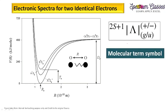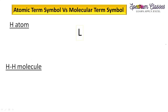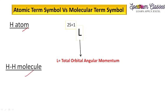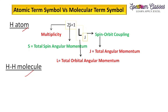Here is the molecular term symbol and how it is written. I will first compare this molecular term symbol with the atomic term symbol and elaborate all such terms one by one. Here is the comparison of atomic and molecular term symbols. This is L, termed as total orbital angular momentum for the atom. This 2S+1, where S is the total spin angular momentum, is termed as multiplicity. This J represents total angular momentum, coming from spin-orbit coupling.